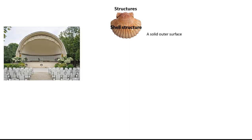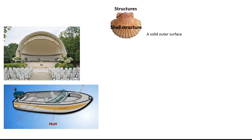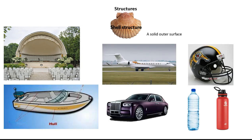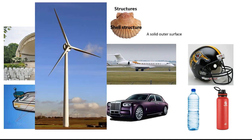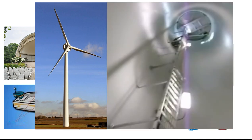For example, a concert shell. A boat's hull is a shell structure. Also, airplane, car, helmet, and water bottles are all shell structures. Is this a shell structure? A wind turbine is actually hollow in the center — as we can see a person climbing up inside — and therefore wind turbines are considered shell structures.